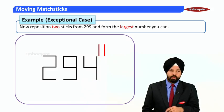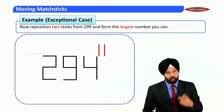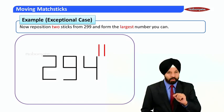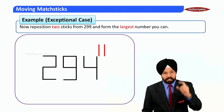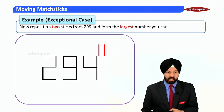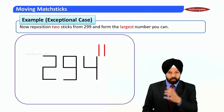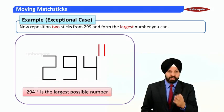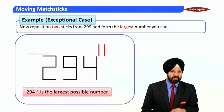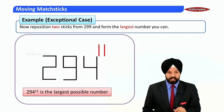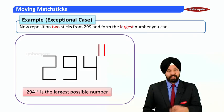Many of you must be thinking that how can two ones be formed with the help of two matchsticks. But we all know that the power which is a superscript is smaller in size, and as it is smaller in size, so two ones require two matchsticks which we have picked from last digit 9, so that the largest possible number turns out to be 294 raised to power 11. So I believe this question must have created boom in your brain and must have ignited your brain, right? Let's move ahead.